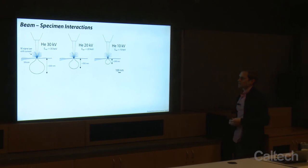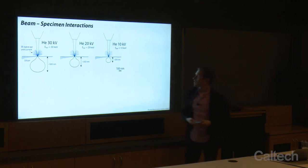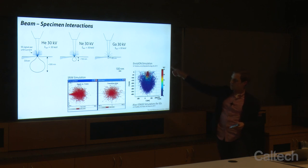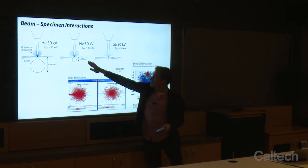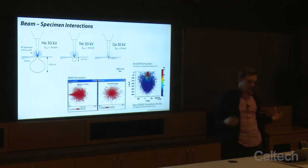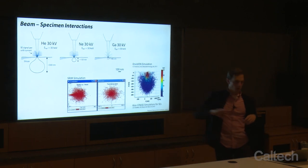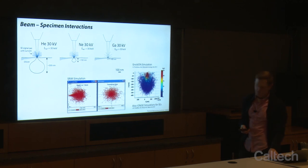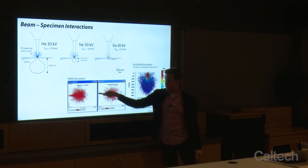If we change the helium ion beam voltage from 30 to 20 to 10 kV, our interaction volume scales accordingly — about 200 nanometers deep at 10 kV. Comparing helium, neon, and gallium all at 30 kV: the stopping power for gallium is higher, so about 60 nanometers depth for gallium in silicon; 150 for neon; and 500 nanometers for helium. When doing ion microscopy, keep in mind the three dimensions over which the beam scatters and damages your sample. SRIM simulations work for any ion species and energy but won't track an evolving surface. Software like Ionize can actually show an evolving surface as you sputter away material.